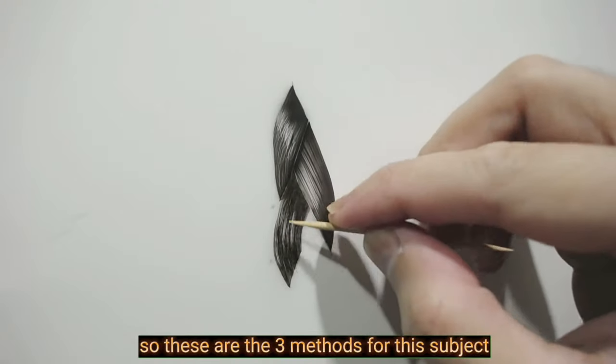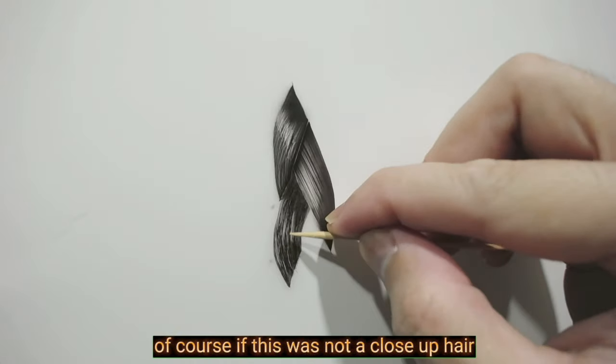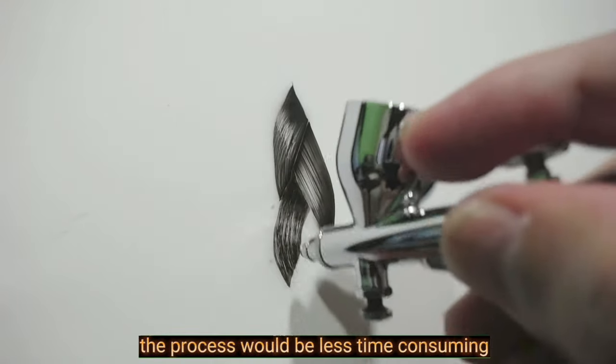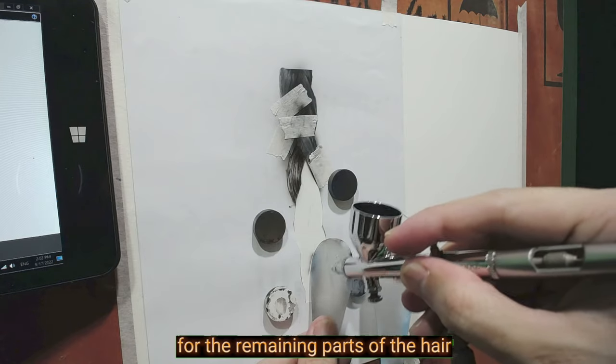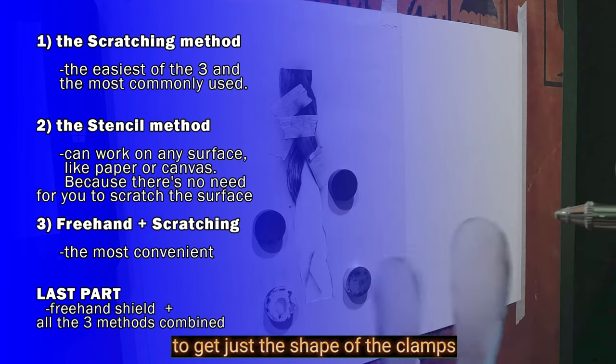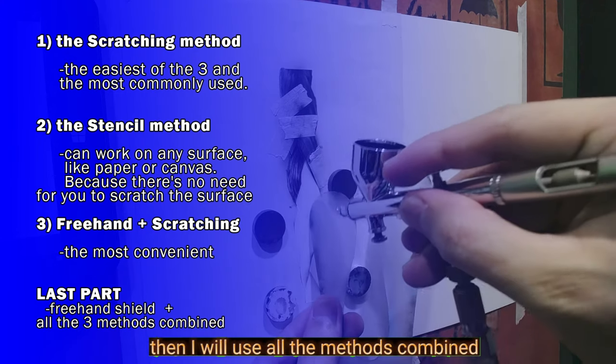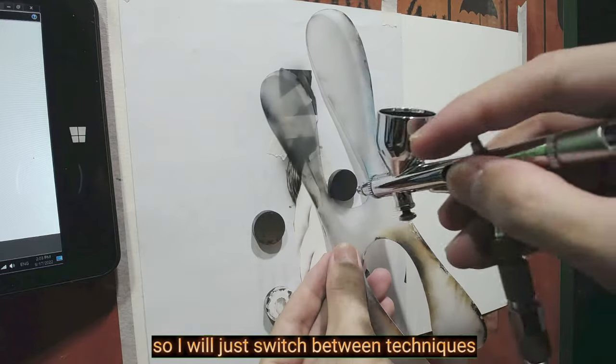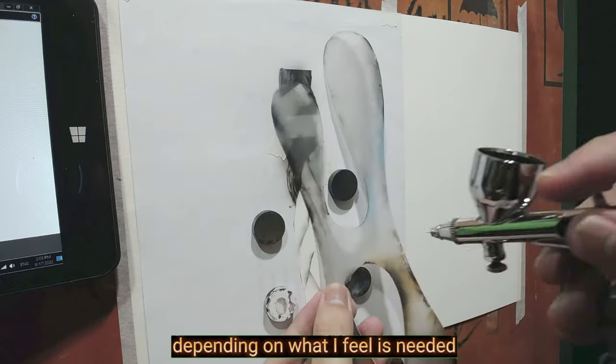So these are the three methods for this object. Of course, if this was not a close-up hair, the process would be less time consuming. For the remaining parts of the hair, I will just start using a freehand shield to get just the shape of the clamps. Then I will use all the methods combined. So I will just switch between techniques depending on what I feel is needed.